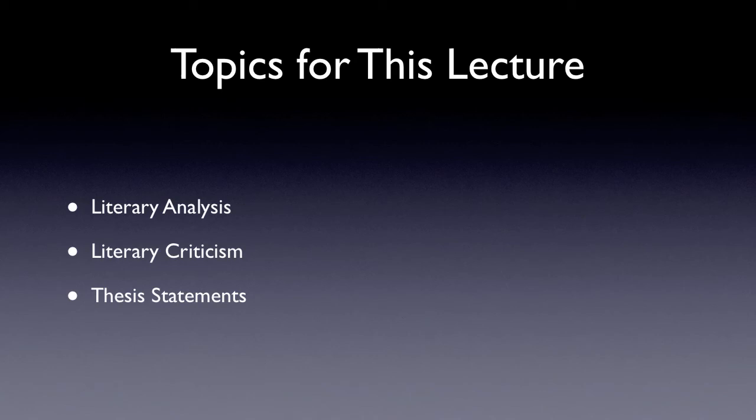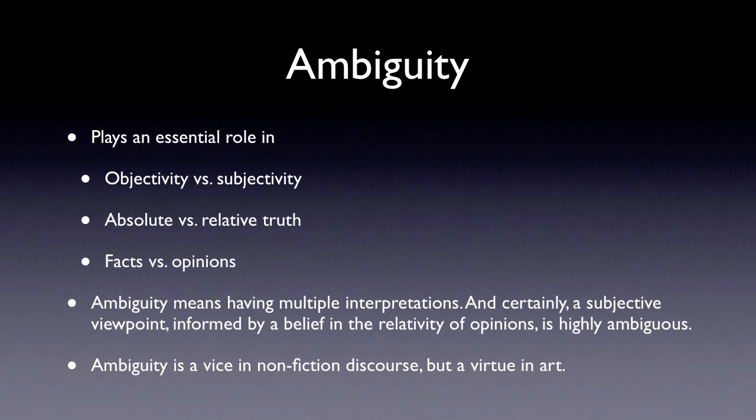In the previous lecture, I talked at length about the aspects of objectivity-subjectivity, absolute versus relative truth, and facts versus opinions. The element of ambiguity plays a large part in all three of those sets of oppositions. Ambiguity means having multiple interpretations, and certainly a subjective viewpoint informed by a belief in the relativity of opinions is highly ambiguous.